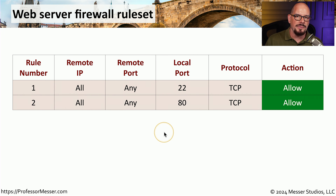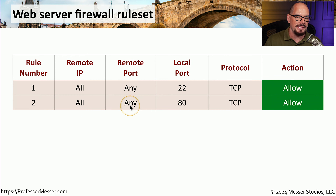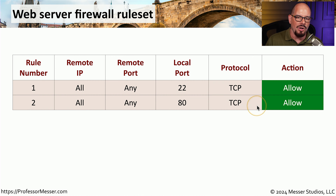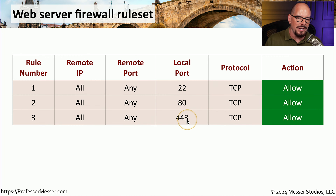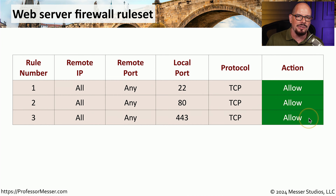Rule two is a similar rule to rule one. It has a remote IP of all and a remote port number of any, so anyone can connect to this device over local port number 80 running the TCP protocol. Port 80 is commonly used for web traffic and all of that traffic would be allowed. And we're probably also going to allow port 443 — the next rule in the rule set — which is also allowed to this service.